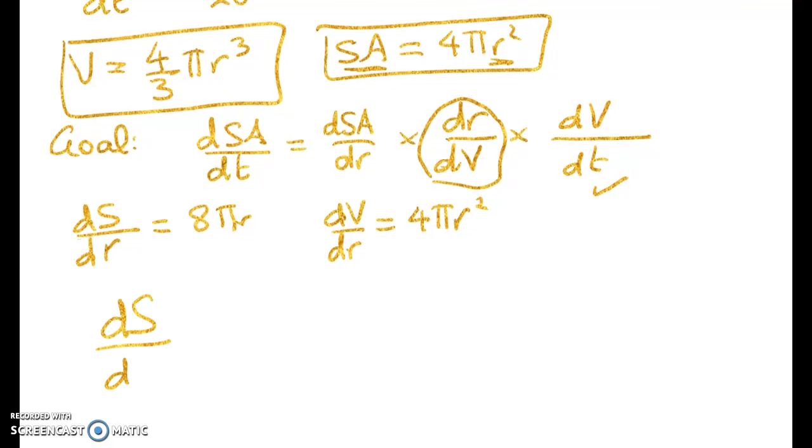So dS by dt is equal to 8 pi r times 1 over 4 pi r squared. I suppose I should explicitly write out that dr by dV is 1 over 4 pi r squared. And the last one dV by dt is 9 over 2.